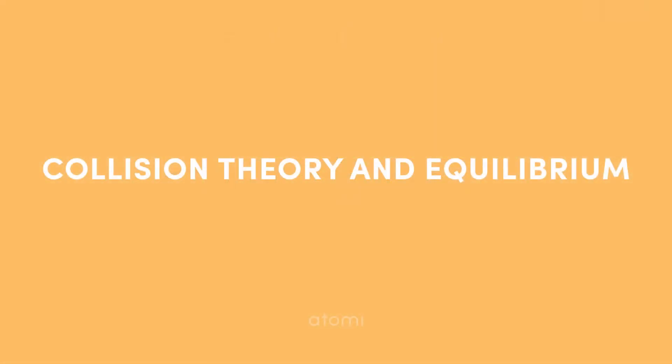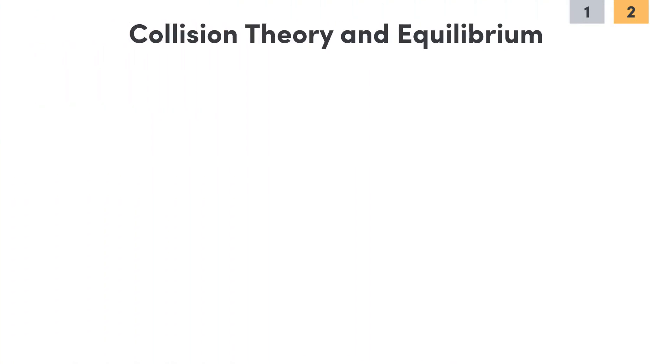Now if we're thinking about reaction rates, the two major points for a reversible reaction that's heading towards a state of equilibrium are that as the reactants get used up, the forward reaction slows down.